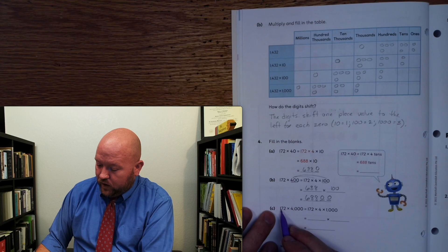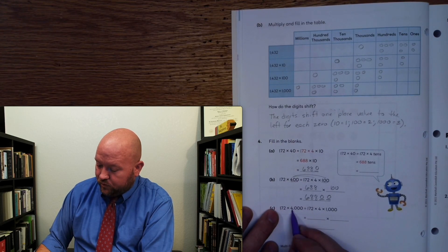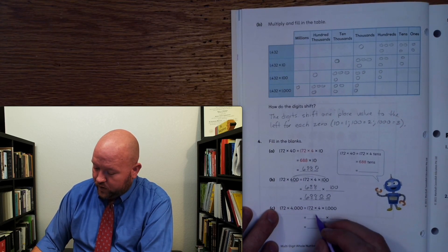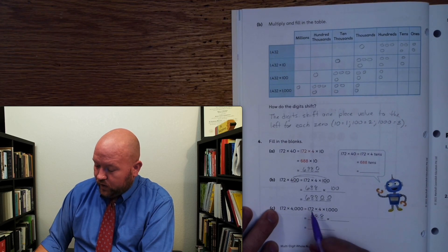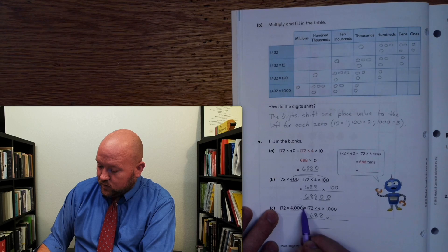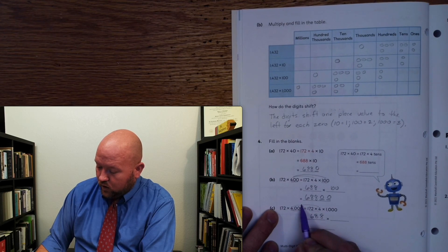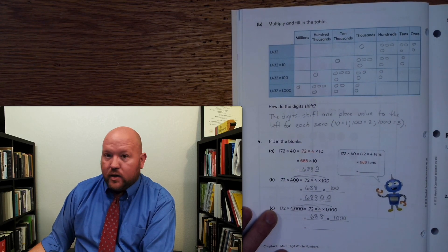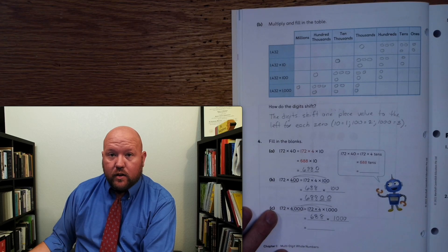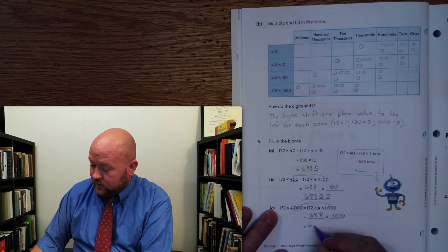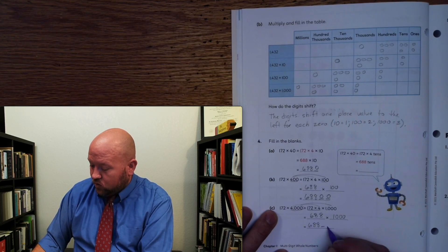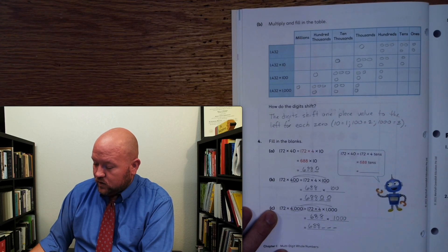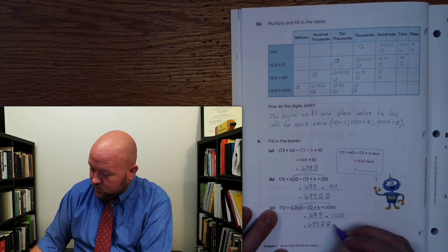And the last one: 172 times 4,000. We've broken 4,000 into 4 and 1,000. The answer to 172 times 4 is 688. Now we multiply times 1,000 — shift the place value over three spaces: 688, and we have three open place values. What are we going to put there? 0, 0, 0.